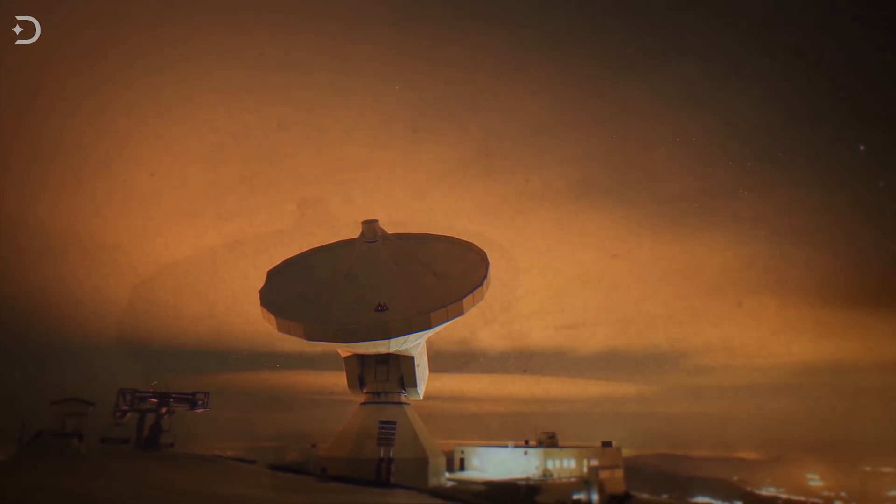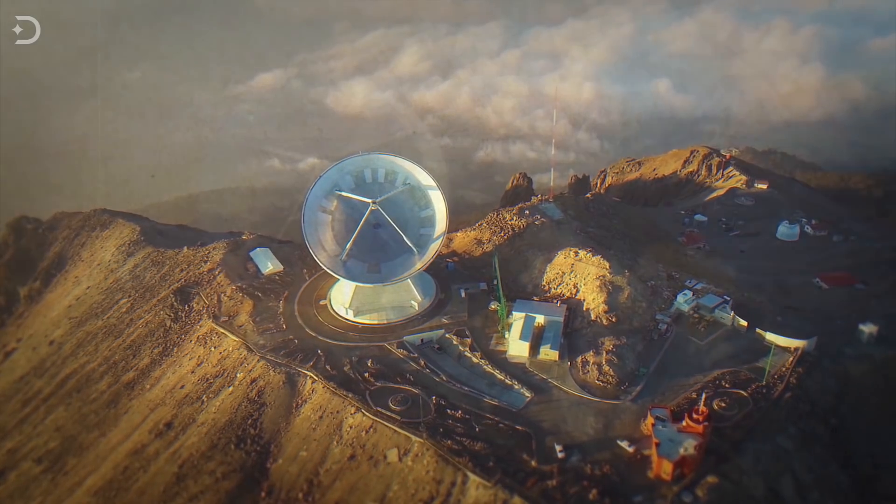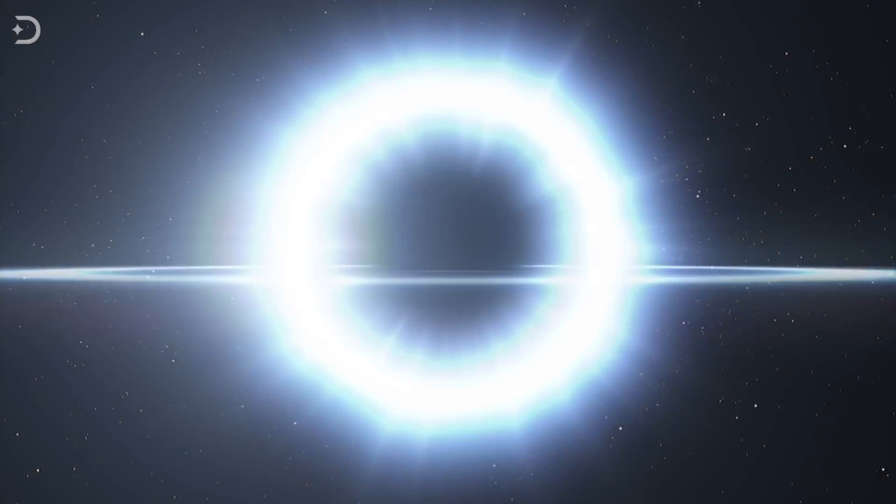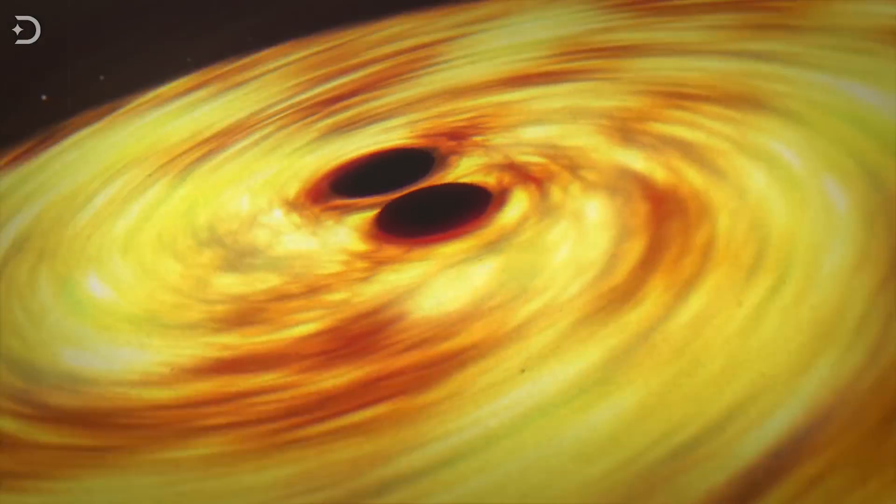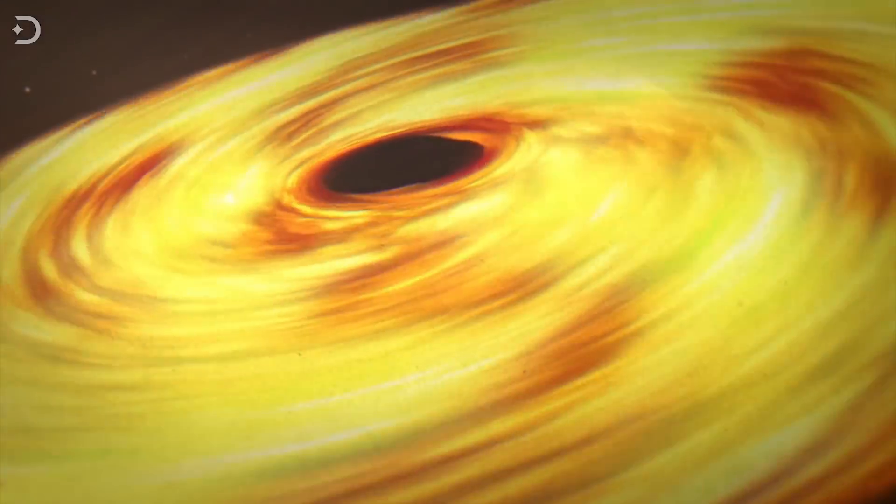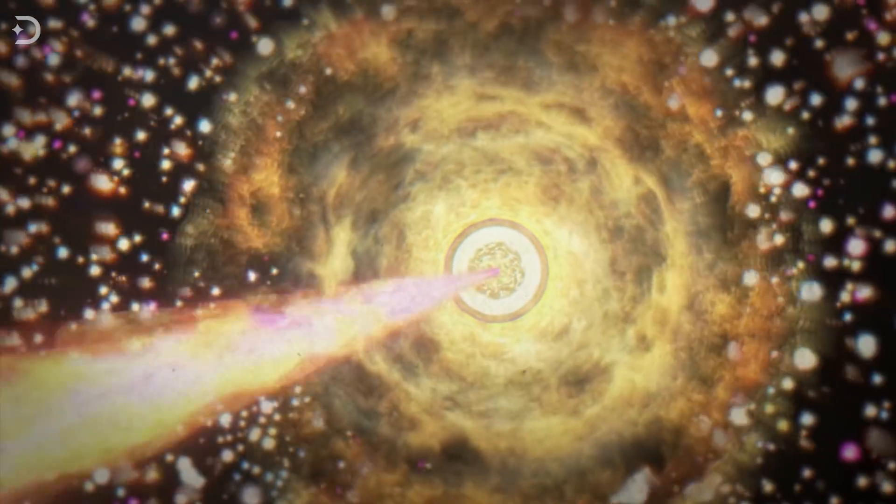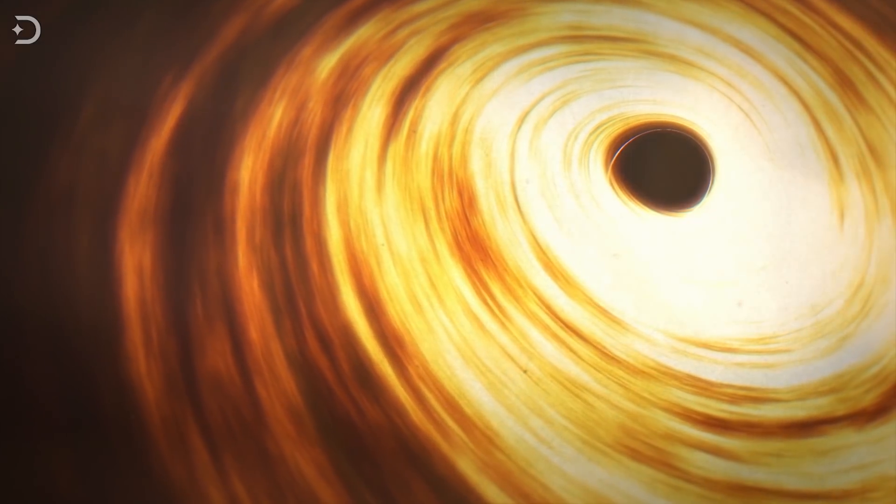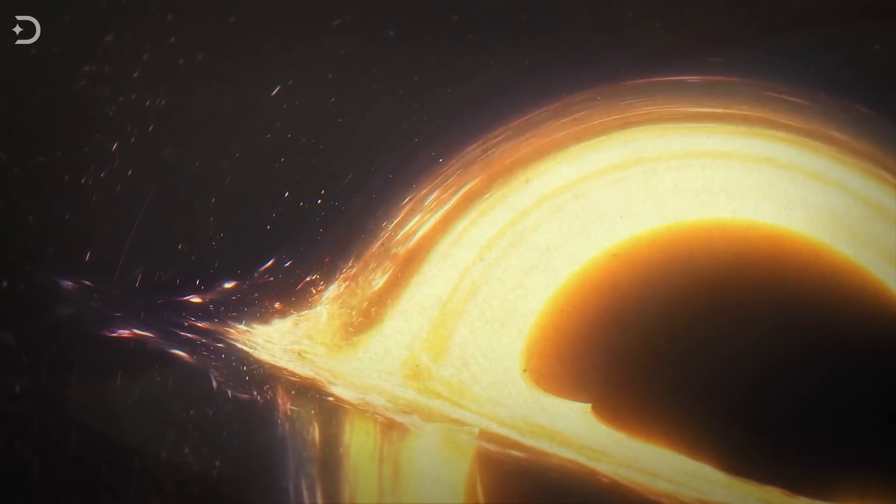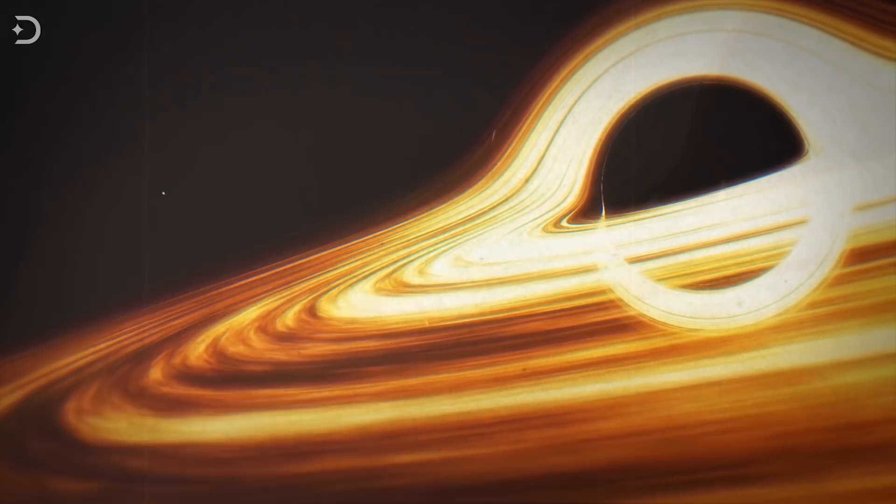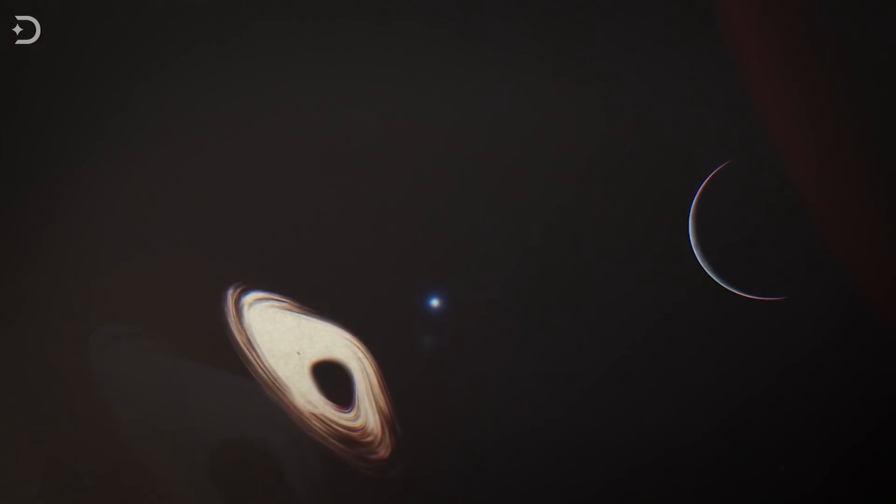But before we're able to directly image black holes, the only way they could be detected was if the black hole was feeding. This creates a ring of fire, called an accretion disk, that's caused by heavy gravitational and frictional forces compressing and heating the matter of a star or planet as it falls into the black hole.